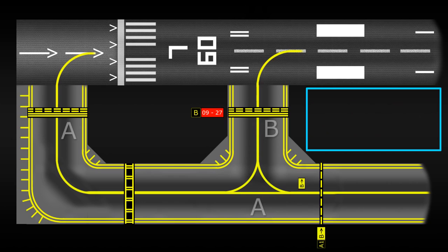Alternatively, if a pilot has already taxied to the end of the runway, they may only see one of the runway numbers, because they can't turn in the opposite direction.